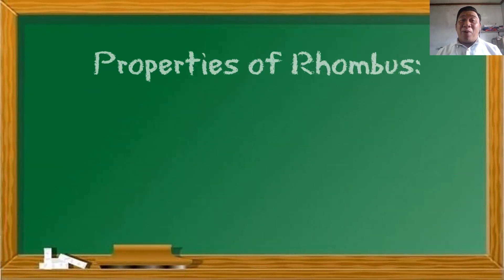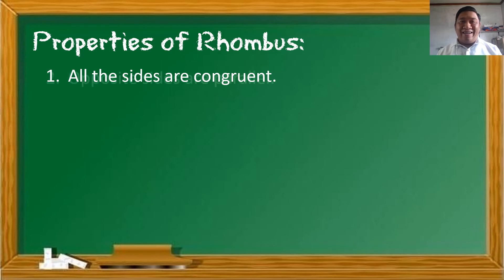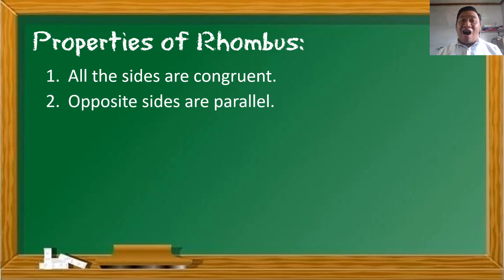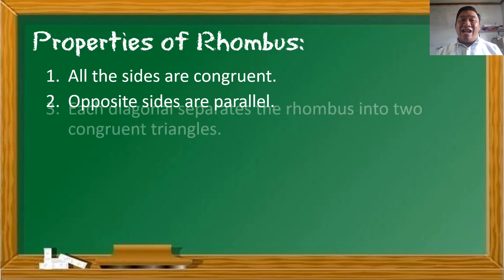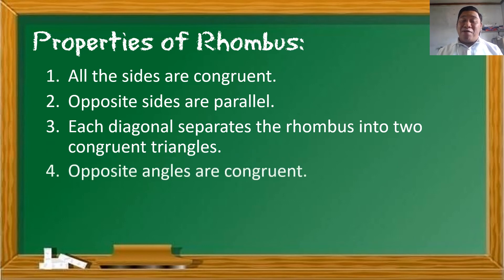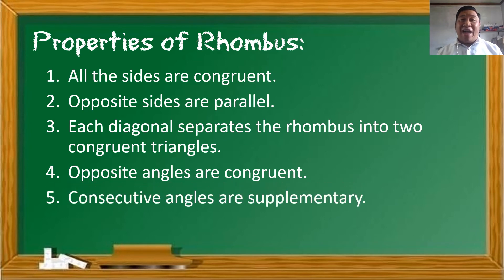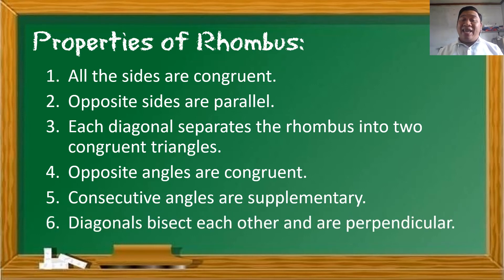Here are the other properties of rhombus: (1) all the sides are congruent; (2) opposite sides are parallel; (3) each diagonal separates the rhombus into two congruent triangles; (4) opposite angles are congruent; (5) consecutive angles are supplementary; (6) diagonals bisect each other and are perpendicular.